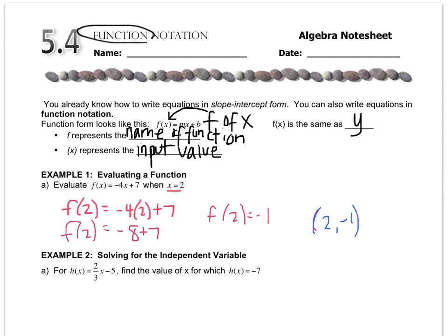It's not kind of like, it is. So that's what this is saying. This is saying the point 2, negative 1, only it's written in what's called function form.